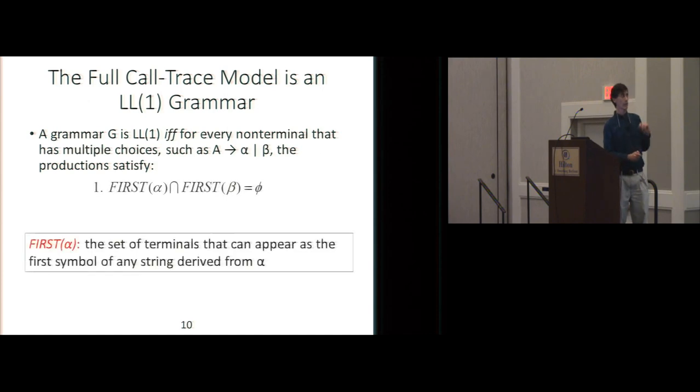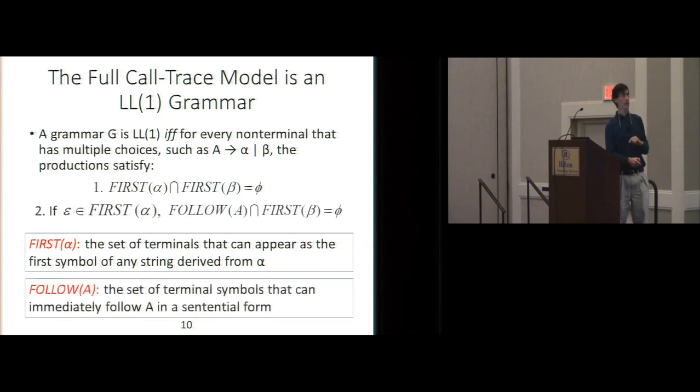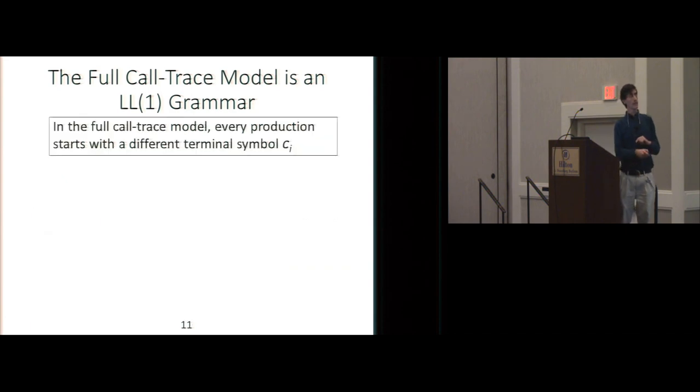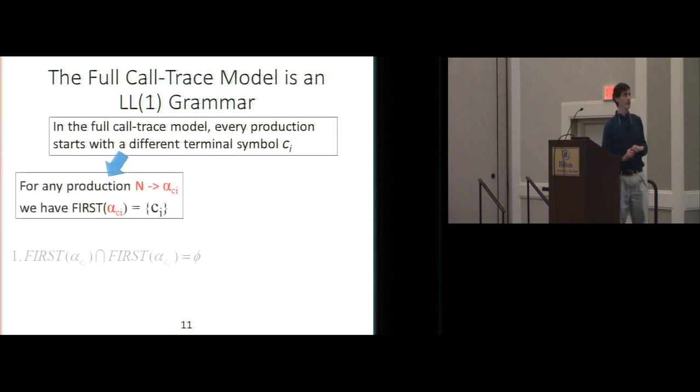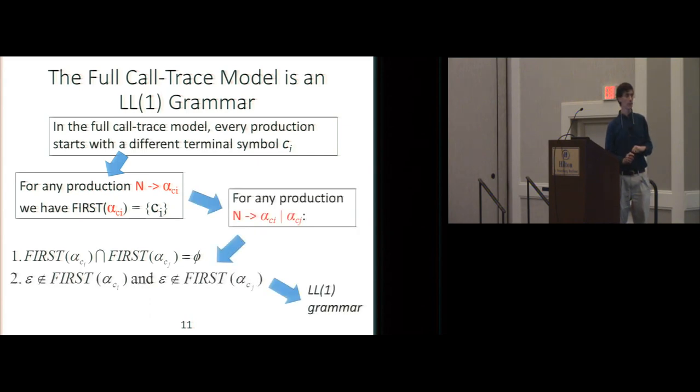Okay, so, is it an LL1 grammar? Well, remember what an LL1 grammar is. There are two properties that if you have a non-terminal that has two choices, two or more choices, but for each pair of choices, you better have an empty intersection of the first sets for the right-hand sides. Okay? And the second thing is that if either of these is nullable, so without loss of generality, if A alpha is nullable, meaning that epsilon is in the first set, then it better be the case that the follow set of the left-hand side non-terminal intersect the first set of the remaining right-hand side is empty. Okay? And, in this case, it's trivial, because every, for the full call trace, the original call trace that we're dealing with, what we call grammar G, every production starts with a different terminal symbol CI, so there are no epsilons in the first sets, and there are no conflicts in the first sets. Okay? So, no conflicts there, no problems there. So we have an LL1 grammar, so that's good.